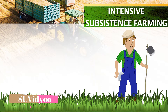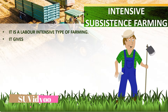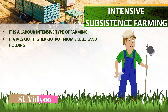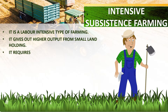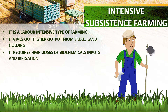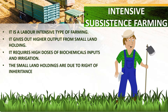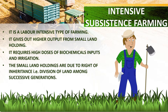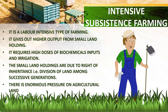Intensive subsistence farming is a labor-intensive type of farming. It gives out higher output from small landholdings. It requires high doses of biochemical inputs and irrigation. The small landholdings are due to the right of inheritance, i.e., division of land among successive generations. There is enormous pressure on agricultural land in intensive subsistence farming.